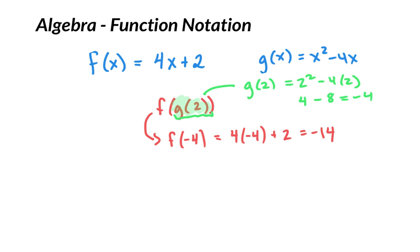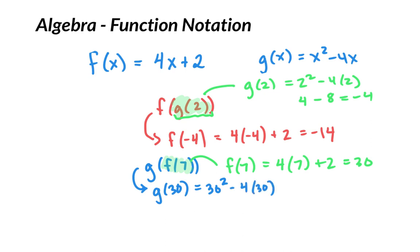Let's do one more real quick. Let's do G of F of 7. So again, we always start on the inside. We'd say, OK, start with F of 7. So F of 7 is going to be equal to 4 times 7 plus 2. That is 30. So then we jump down. We say, all right, I know what's inside those parentheses. It's 30. G of 30 is equal to 30 squared minus 4 times 30. Now let me check my mental math. That's going to be 900 minus 120 for 780.